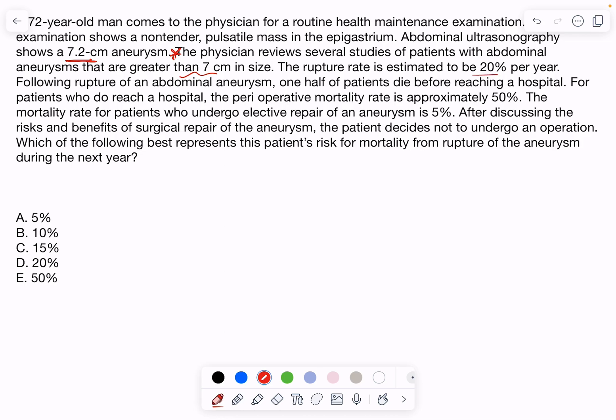The rupture rate is estimated to be 20% per year. So, for people who have an aneurysm greater than 7 centimeters, of 100 patients with an aneurysm above 7 centimeters, 20 will have rupture every year. Every year, 20 of 100 will have a ruptured aneurysm.